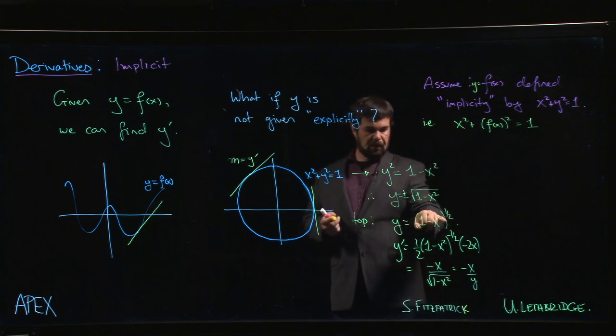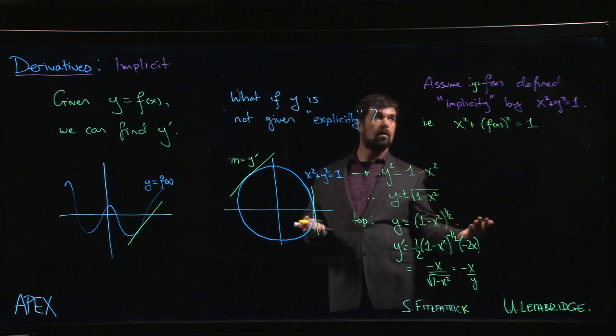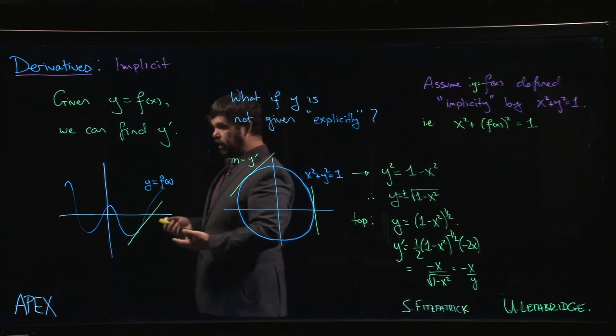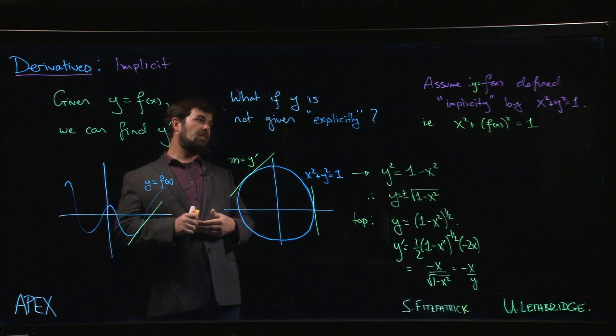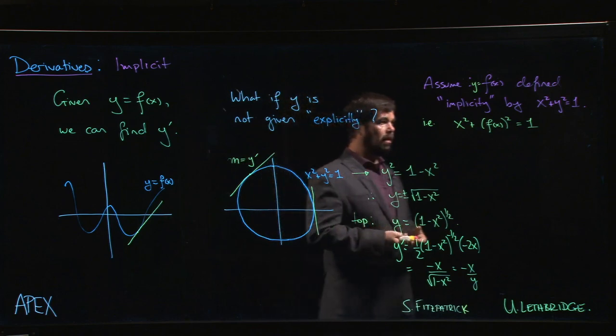And of course there is—if this is our f of x, if I square this and I add x squared to it I get one. So in this case it's a valid assumption. In a lot of the examples we're going to see, it's not going to be so easy to actually find this function, and so even though we can't find it, still we'll try to make this assumption and see what we can say.